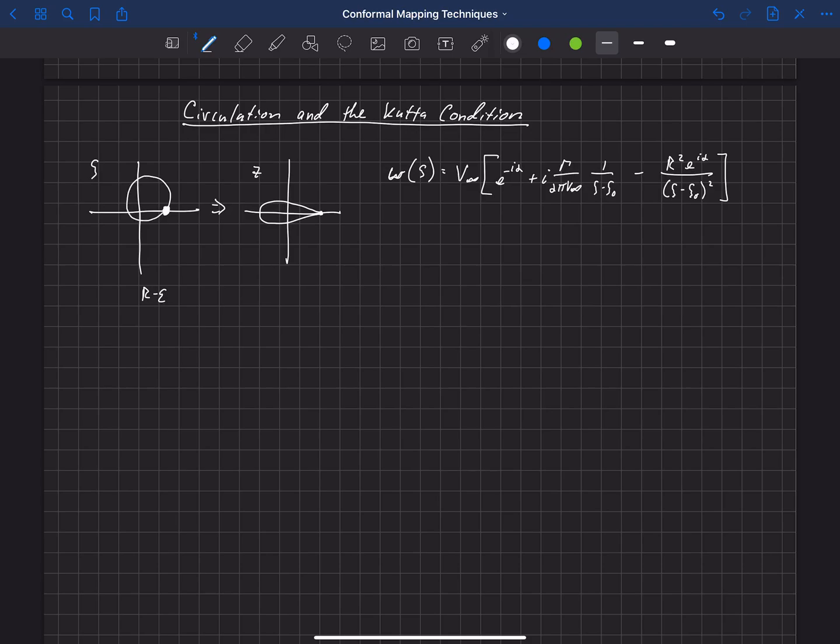We're going to offset the cylinder not only on the real axis but on the imaginary axis, so we're offset at some place zeta naught. By definition we have set that so that the singularity falls on the surface, and by doing that it creates a cusp in the z plane at that point and creates basically the trailing edge of our airfoil.